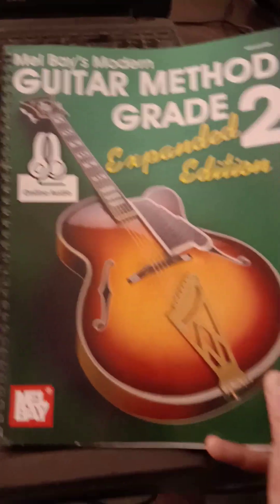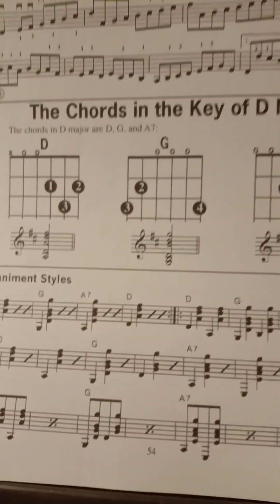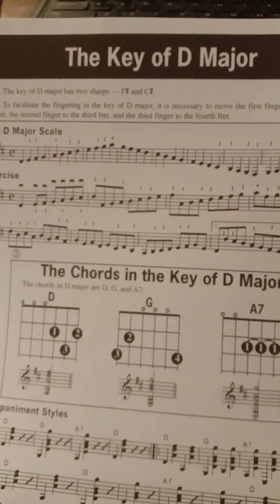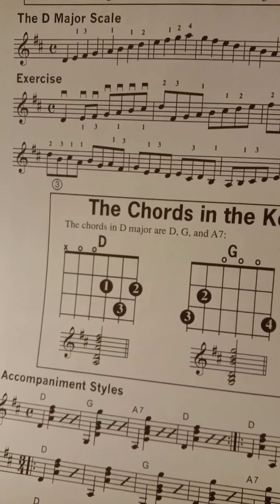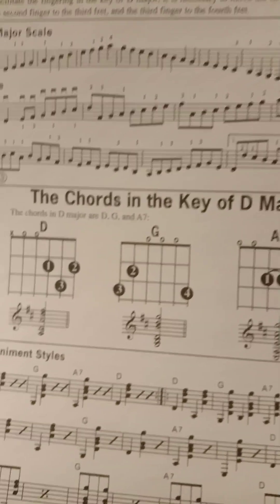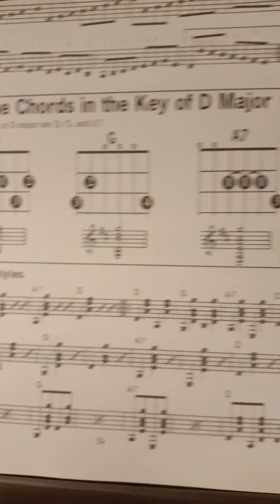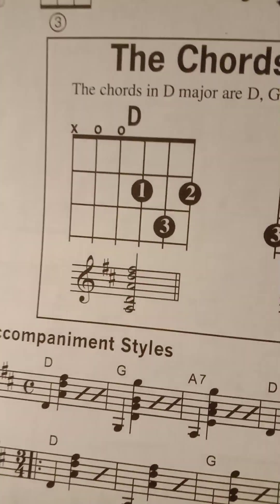Now here is Mel Bay's Guitar Method Grade 2, the expanded edition. Grade 2 is higher than Grade 1, obviously. On page 54, it introduces the key of D major — the D major scale — and then it introduces the chords in the key of D major, primarily the 1, 4, and 5 chords. So here you finally see the D major chord presented.